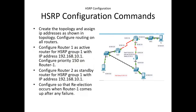We will look at a topology in Packet Tracer with two routers, Router 0, switches, and PCs. IP address assignment has already been covered in Routing and Switching 1. We need to configure Router 1 as the active router for HSRP group number 1 with virtual IP address 192.168.10.1, and configure a priority of 150 on Router 1.